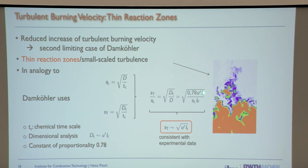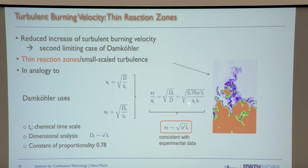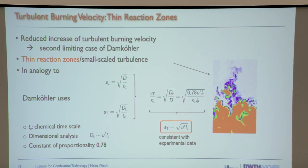He replaces the molecular diffusivity with a turbulent diffusivity, which can be written as u' times L_T. You then see that s_T divided by s_L is the square root of the turbulent Reynolds number. That's what this slide shows. This model is interesting.